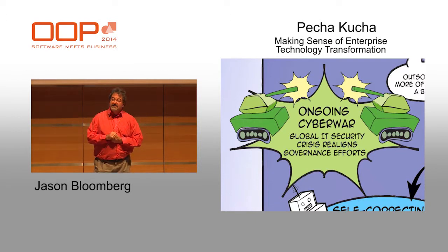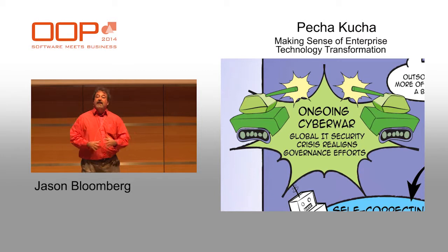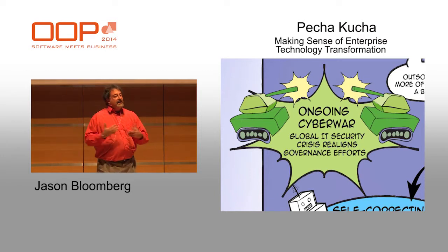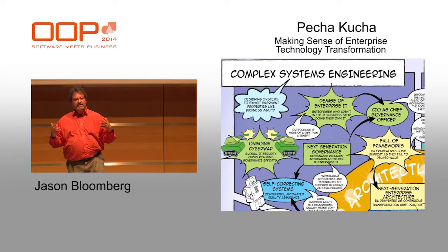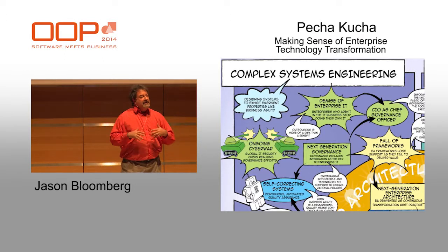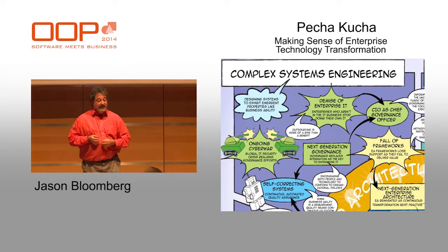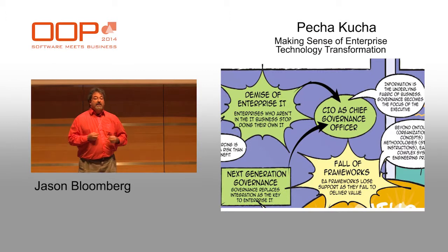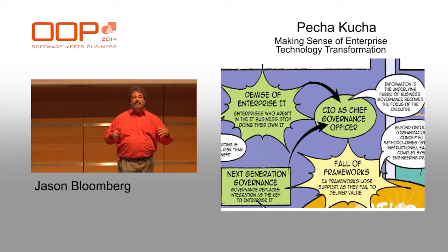Perhaps the most cross-cutting trend in enterprise IT is the ongoing cyber war — it has been going on for years, is currently being fought everywhere in the world, and is impacting how enterprise IT decision makers spend money across the entire globe. This is part of the complex systems engineering super trend. As organizations try to achieve business agility, they realize it is an emergent property of their organizations, requiring a new approach to architecting them as complex adaptive systems. Governance becomes the central activity of IT management — the CIO becomes a chief governance officer — governing resources obtained from any location.